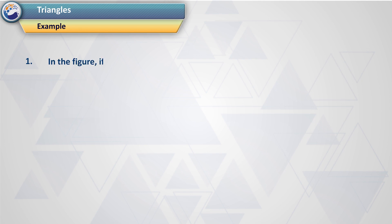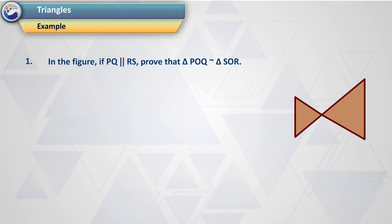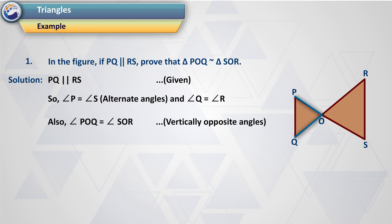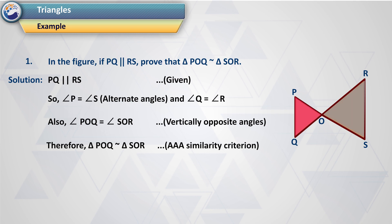Example 1. In the figure, if PQ is parallel to RS, prove that triangle POQ is similar to triangle SOR. Solution: PQ is parallel to RS (given). So angle P = angle S (alternate angles) and angle Q = angle R. Also, angle POQ = angle SOR (vertically opposite angles). Therefore, triangle POQ is similar to triangle SOR by the AAA similarity criterion.